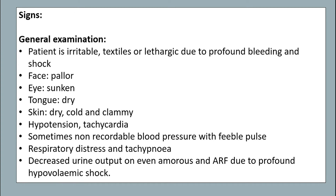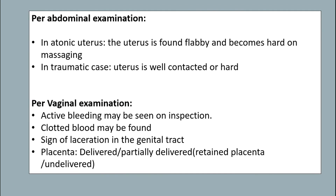On general examination, the patient is irritable or lethargic due to profound bleeding and shock. The face is pale, eyes sunken, tongue dry, skin dry, cold and clammy, with hypotension, tachycardia, sometimes non-recordable BP with fever. Pulse may be feeble, with respiratory distress, tachypnea, decreased urine output, and ARF due to profound hypovolemic shock. On per abdominal examination in atonic uterus, the uterus is found flabby and becomes hard on massaging. In traumatic cases the uterus is well contracted. On per vaginal examination, active bleeding may be seen, clotted blood may be found, and a placenta which may be delivered or partially delivered.